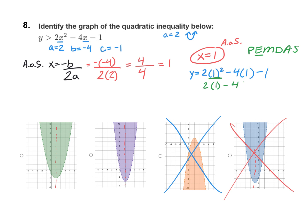And now that we took care of the exponent, we can do the multiplication next. 2 times 1 is 2, 4 times 1 is 4, and then I have the minus 1. And then adding and subtracting comes last. So now if we just go left to right, 2 minus 4 minus 1 is negative 3. So that puts our vertex at 1, negative 3.